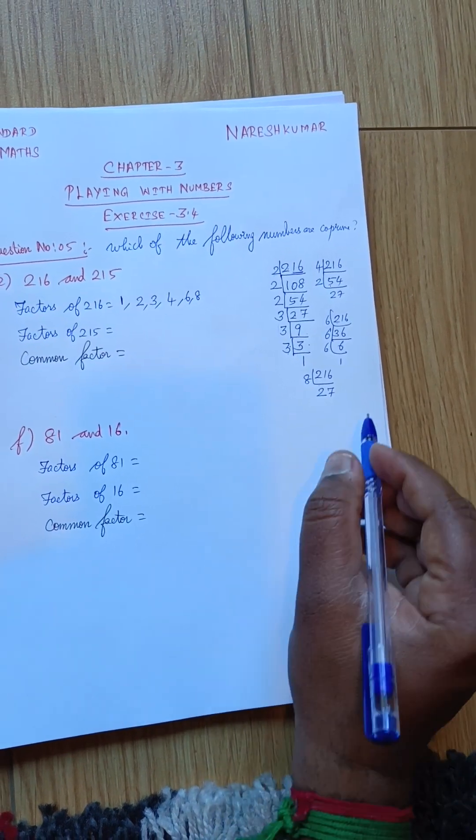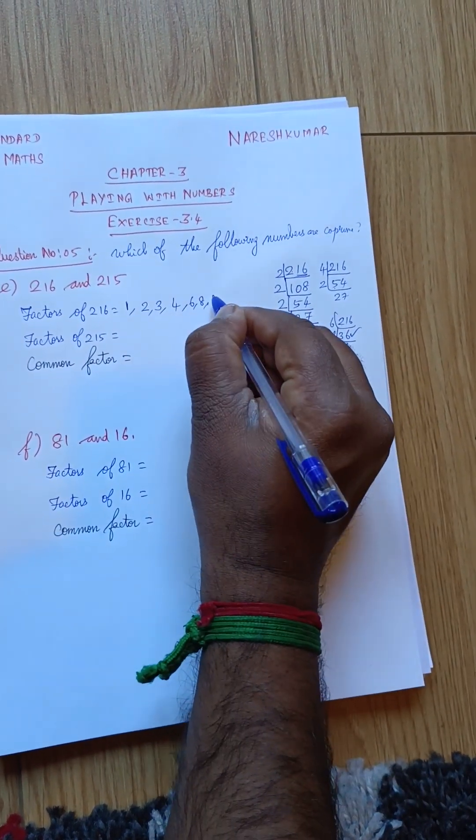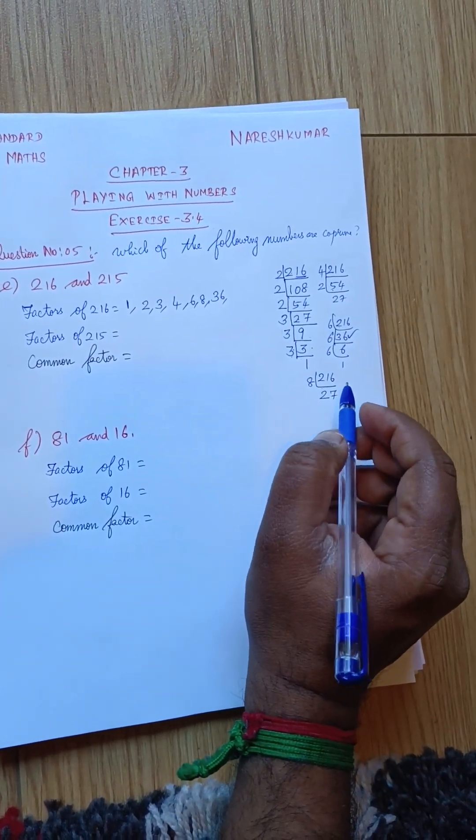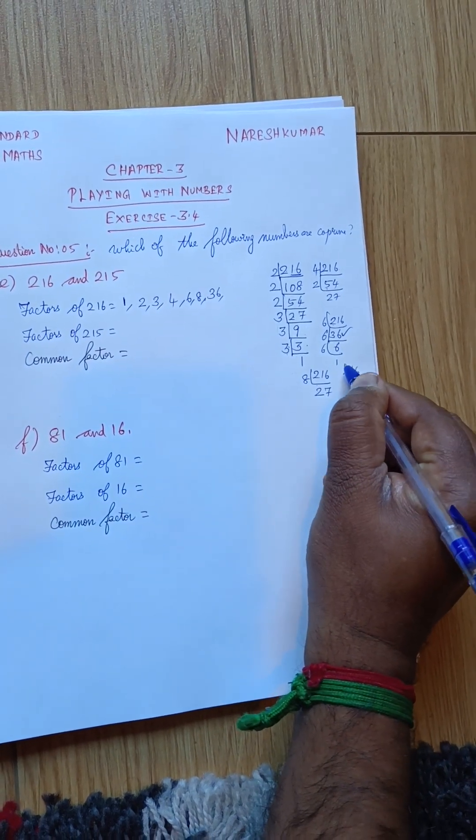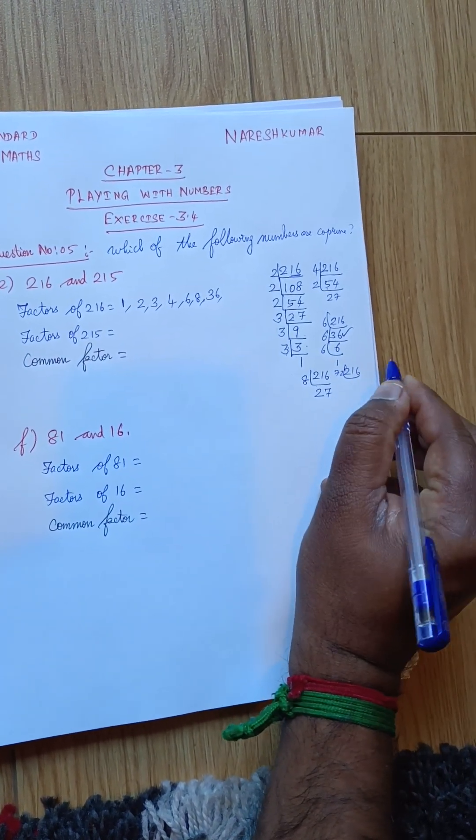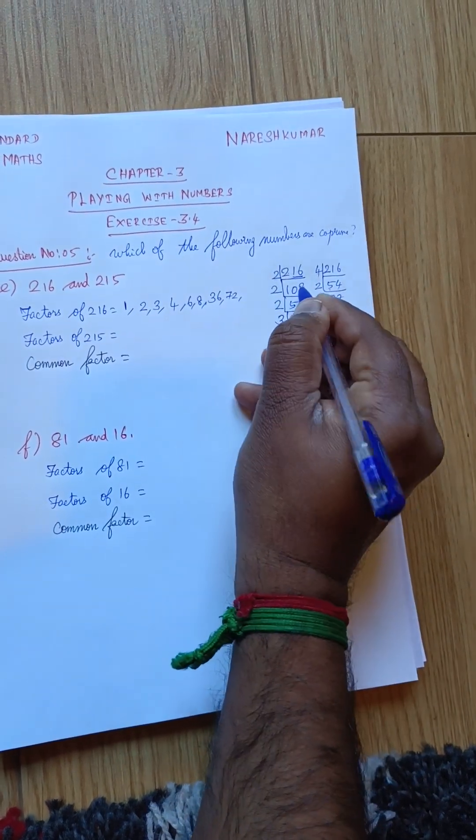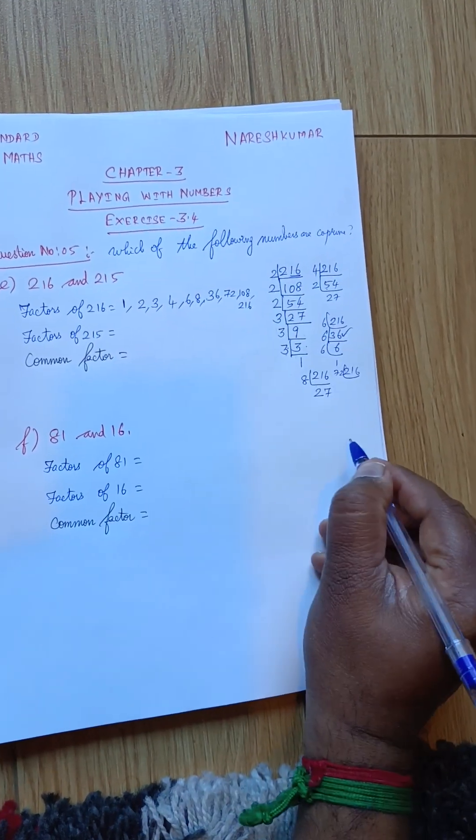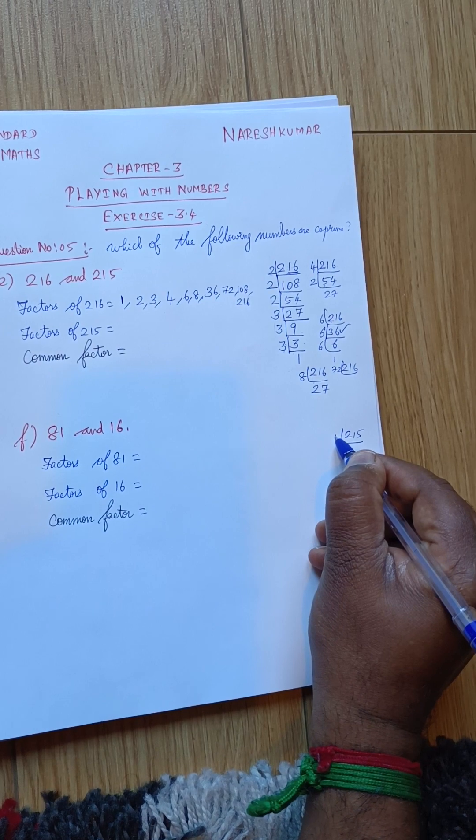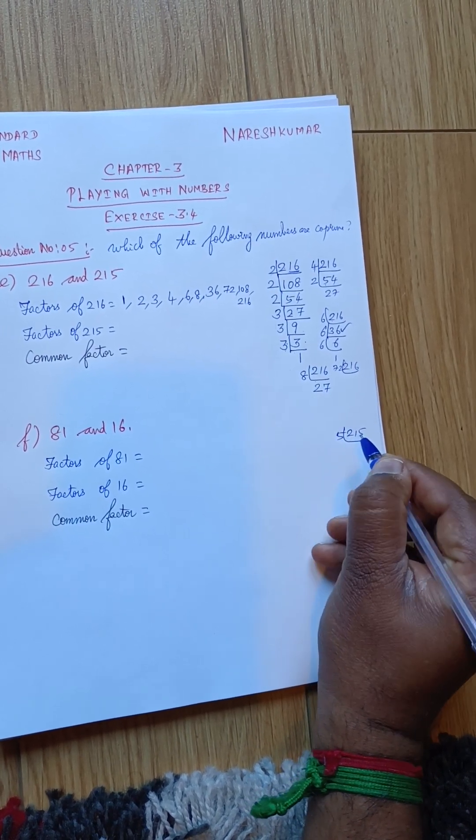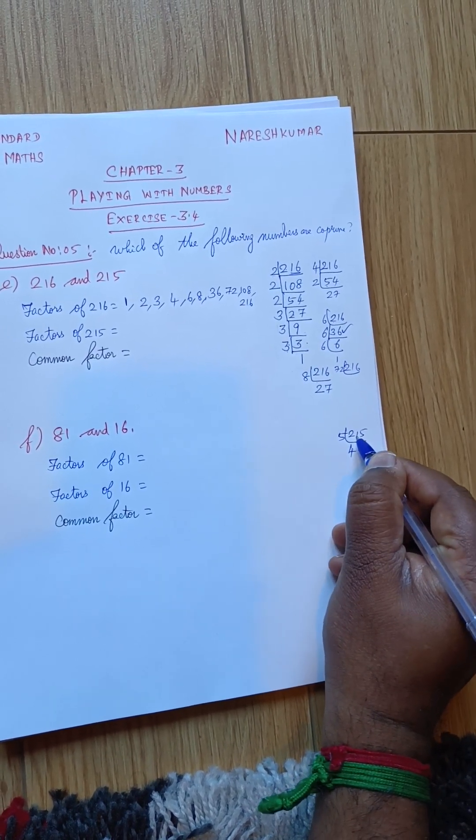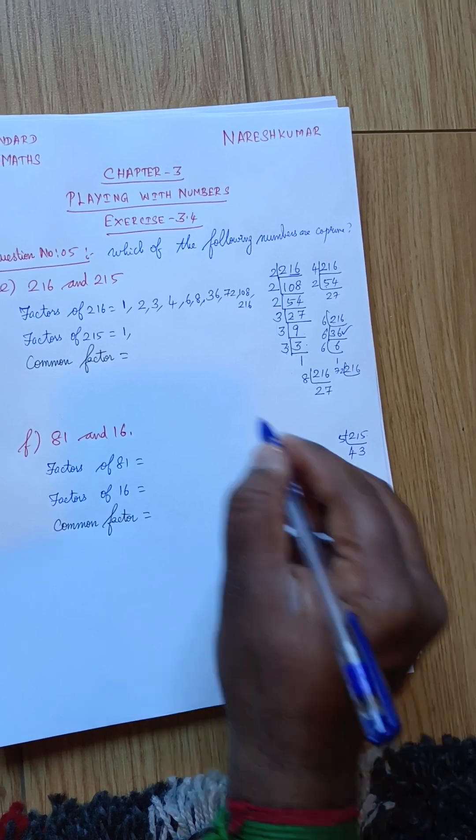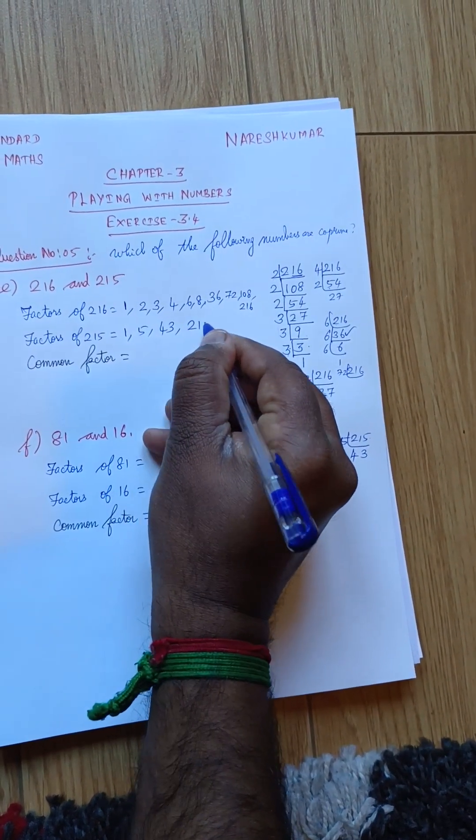Then next, what are the numbers? 36. Yeah, 36 it will come. Then next, which number it will come? 216 divided by 72 it will come. Yes, 72 also will come. Then 108. Then next, 216. Then 215, we will try with 215. 3 table, it won't be applied. 5 table, 4 5's are 20. Balance 1, 3. So, 1, 5, 43, 215.